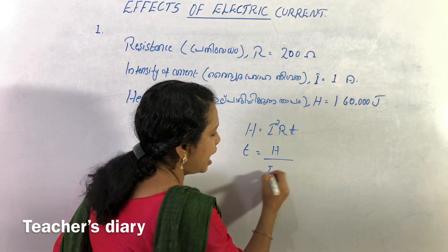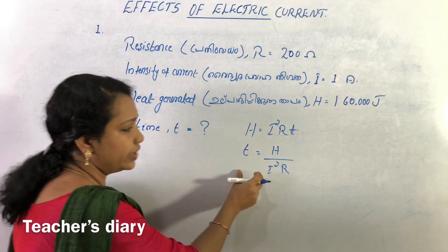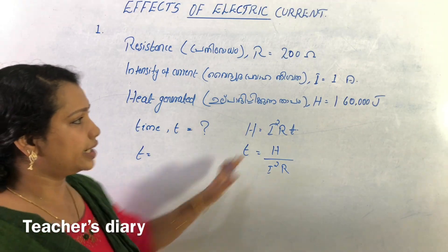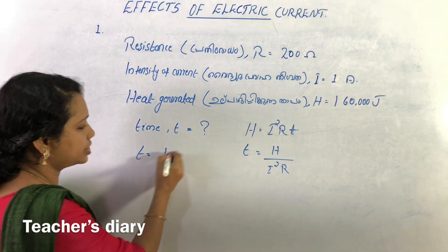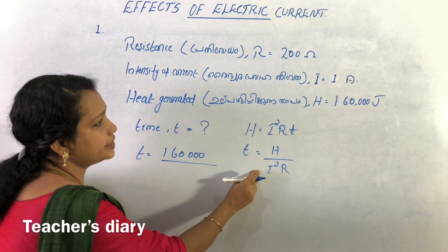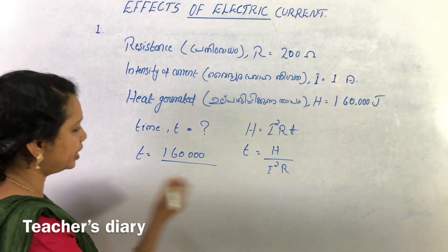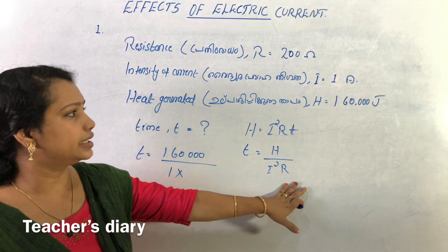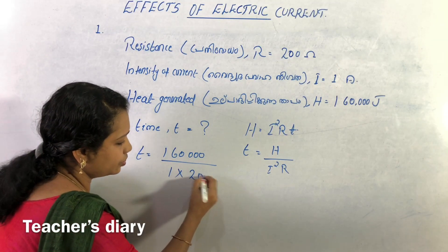T is equal to H divided by I squared into R. We substitute values: H is 1,60,000. I is 1 ampere, so I squared is 1. Resistance is 200 ohms.